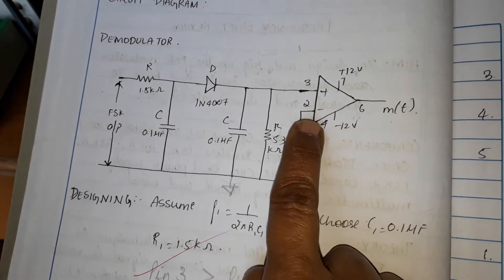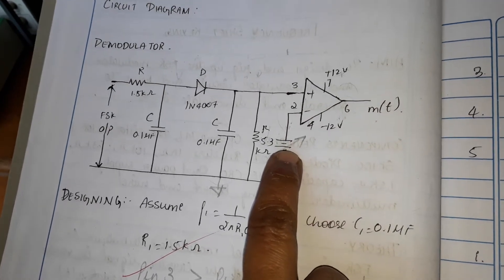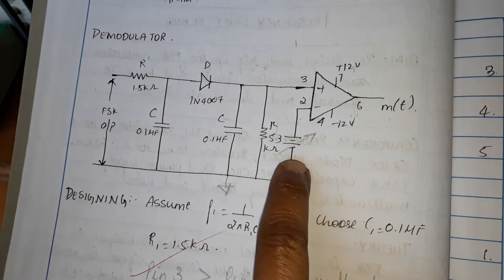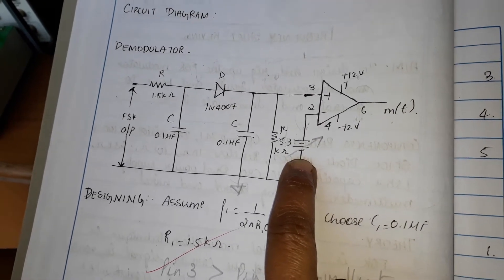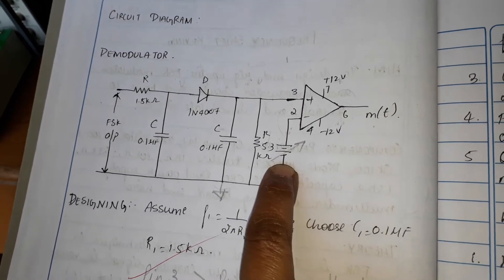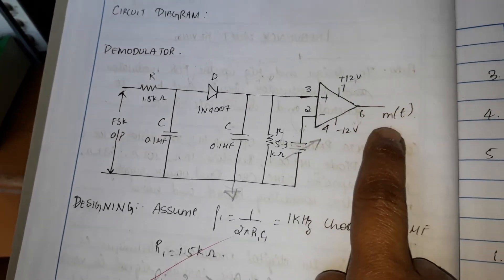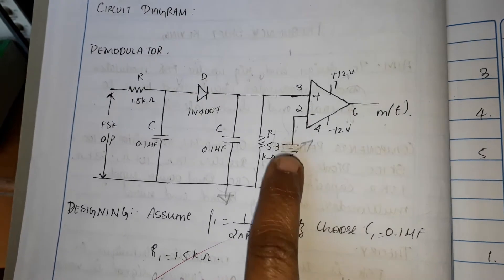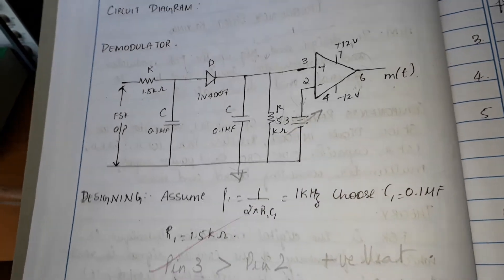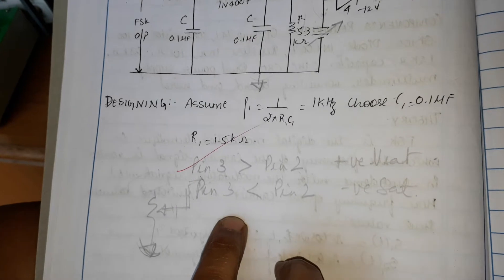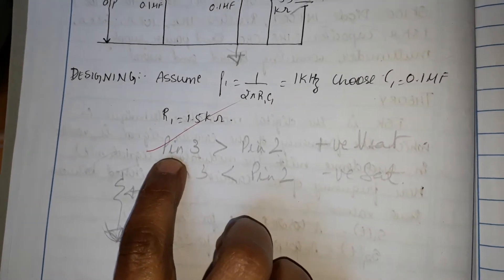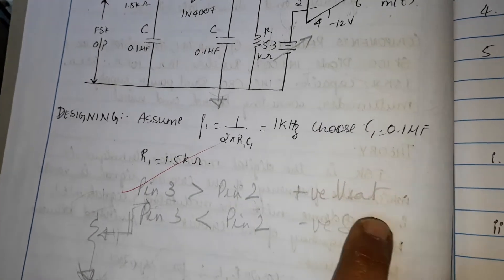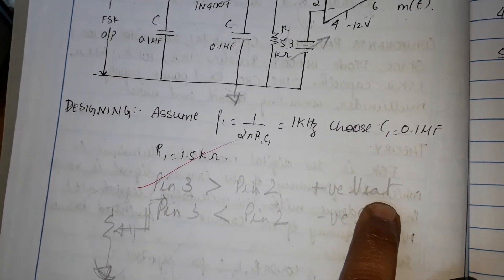The op-amp present at the final stage acts as a comparator. To pin number two of the op-amp, we can connect it directly to ground, or we can give a variable power supply to pin number two if the output is not a perfect square wave. When the voltage at pin number three is greater than that of pin number two, the output goes to positive V-sat.